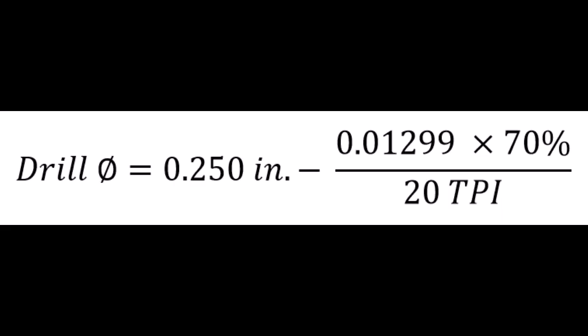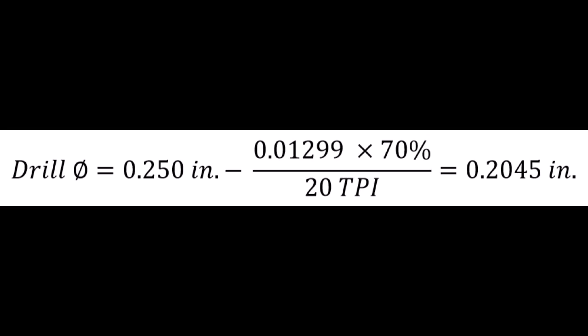As an example, if we wanted to determine the drill required for a 1.25 tap at 70% engagement, all we need to do is plug in the major diameter, 1.25", the threads per inch, 20, and the percentage, which is 70. That gives us a drill size of 0.2045 inch, which is close to the standard size of 5.2 mm.